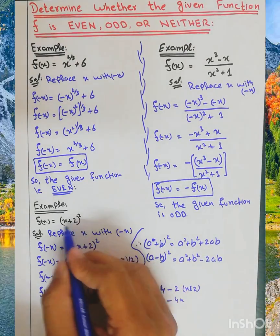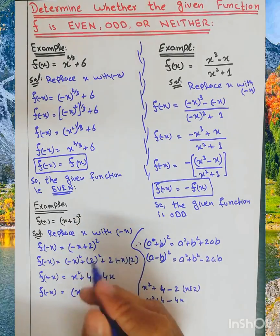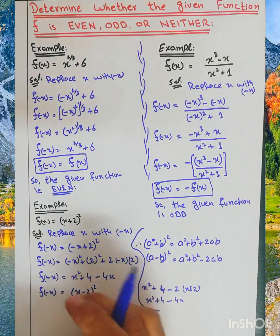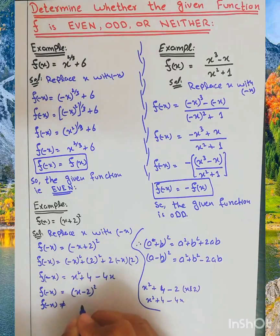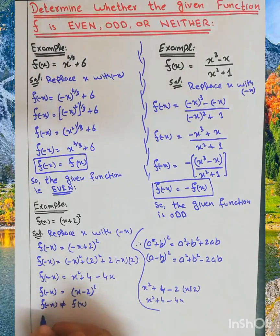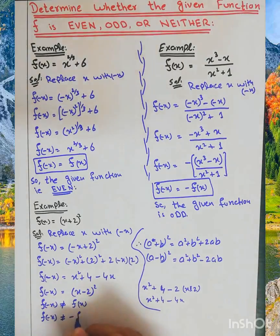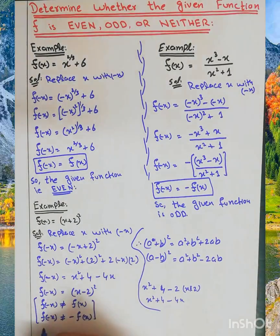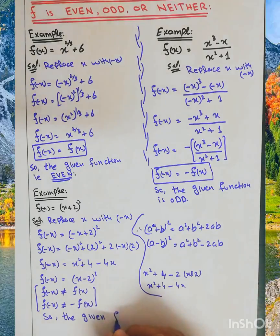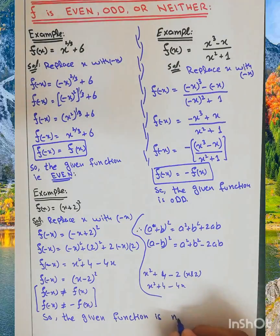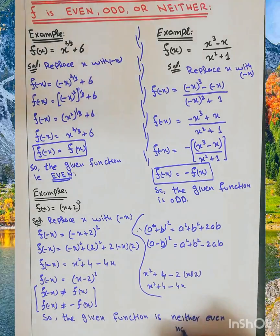We check whether this equals f of x or not. Since f of minus x is not equal to f of x, and f of minus x is not equal to minus f of x, the given function is neither even nor odd.